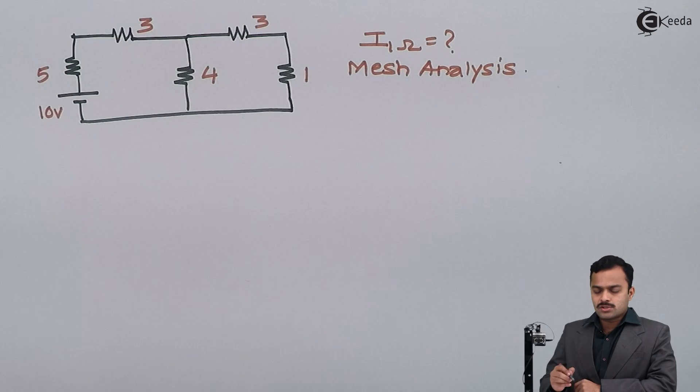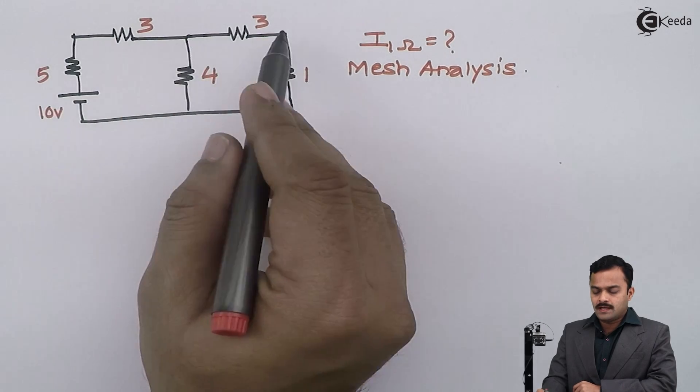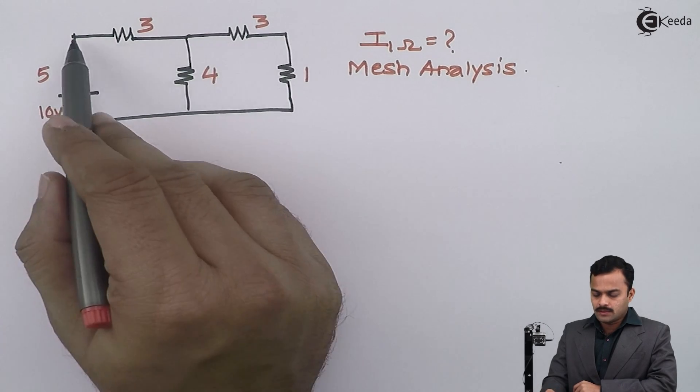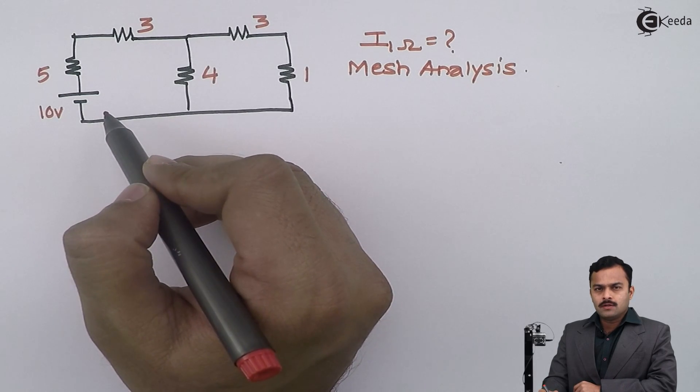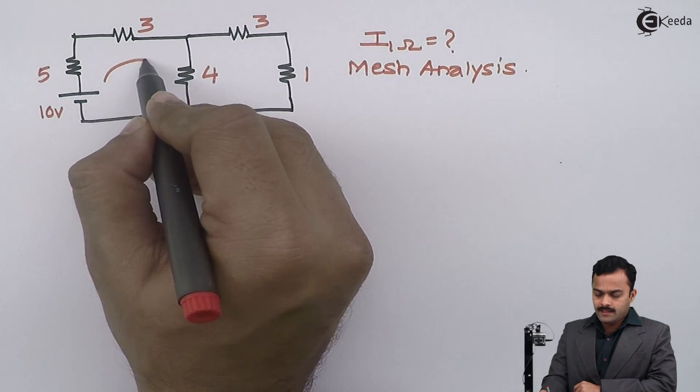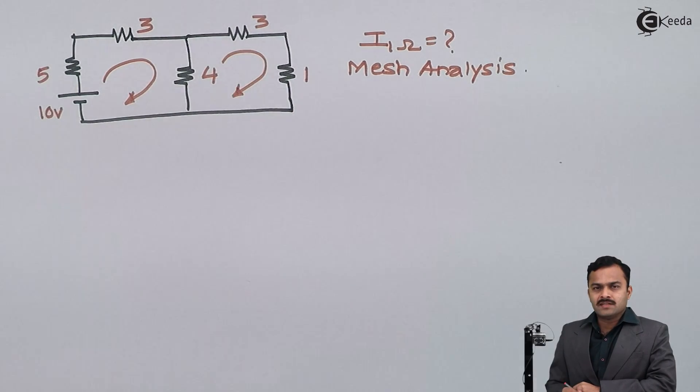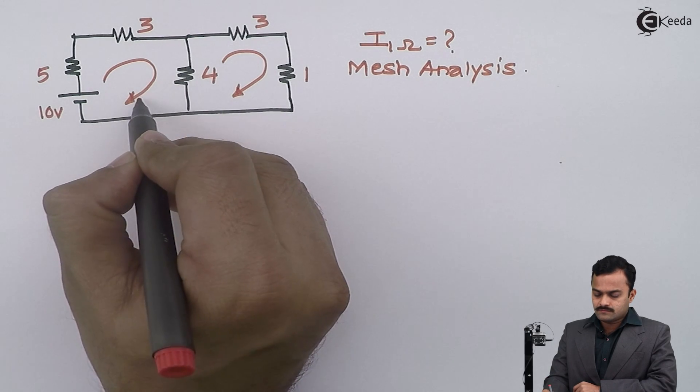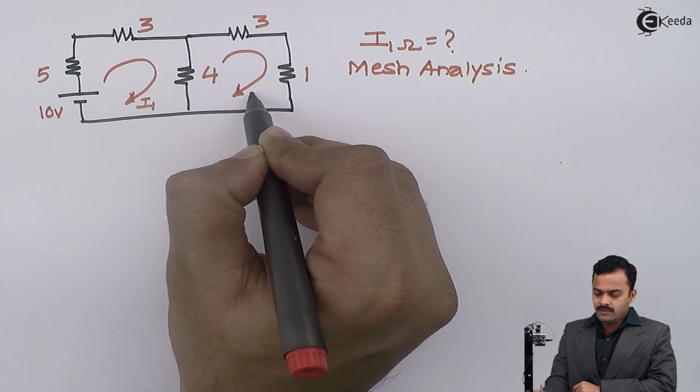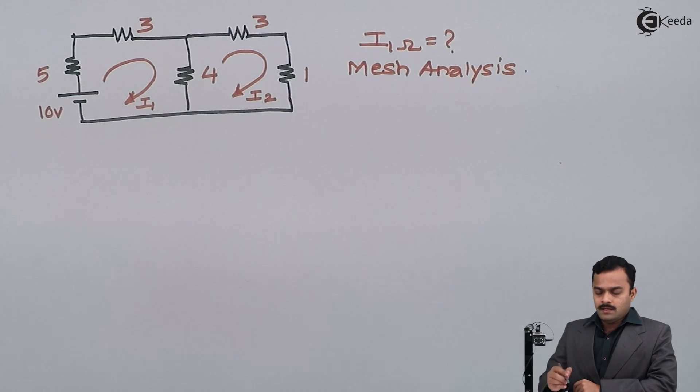The first step is to identify how many number of loops are there. So here I can say two loops are present, a loop is nothing but a closed circuit. I will mention loop current randomly, so here I have selected both the loop currents in a clockwise direction. I will name it I1 and I2.